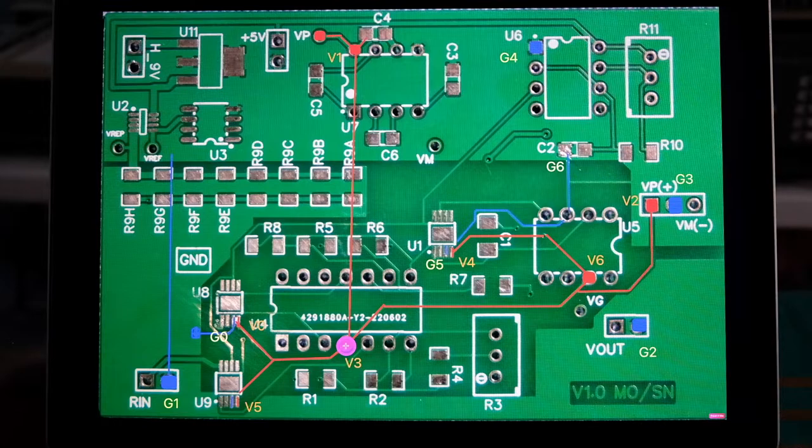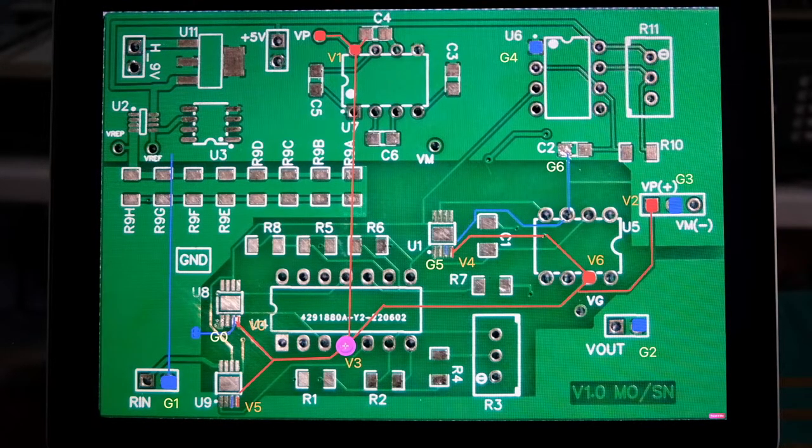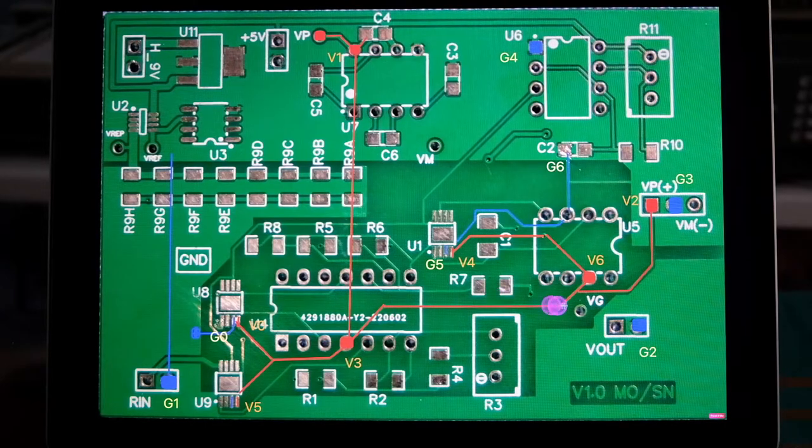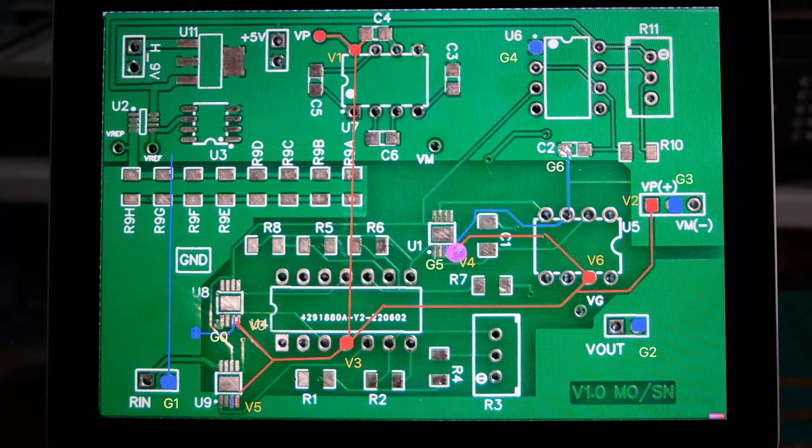This via on the IC itself. And that then distributes itself across these thinner traces to these other chips and other components.